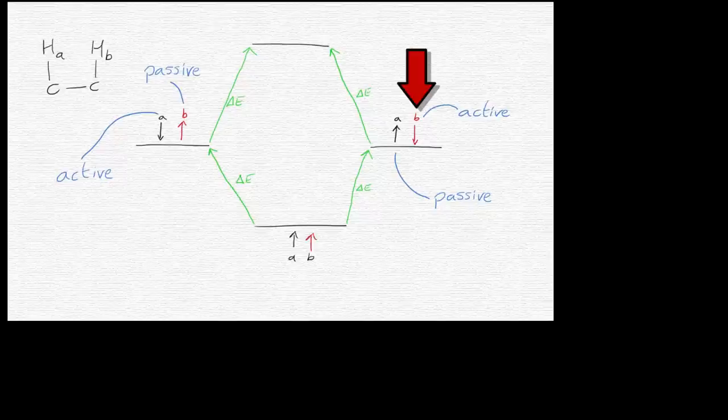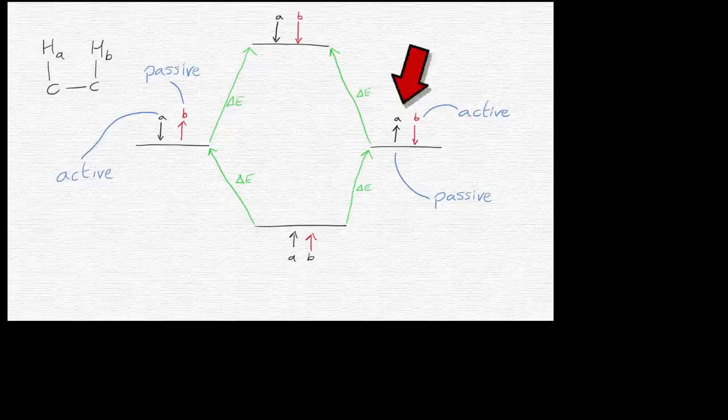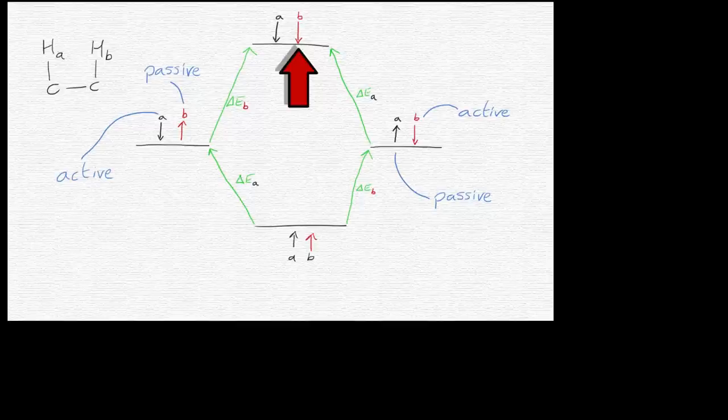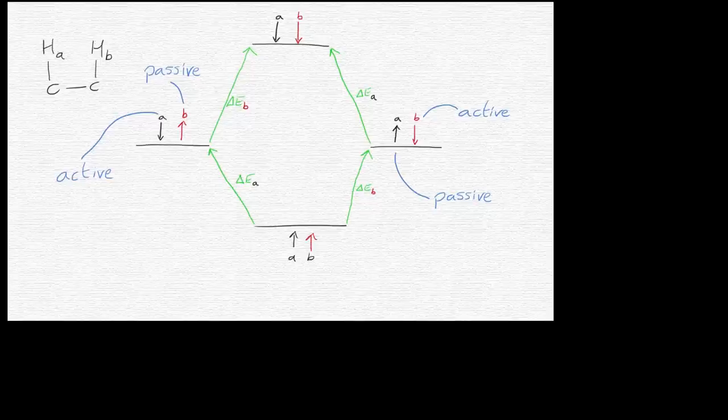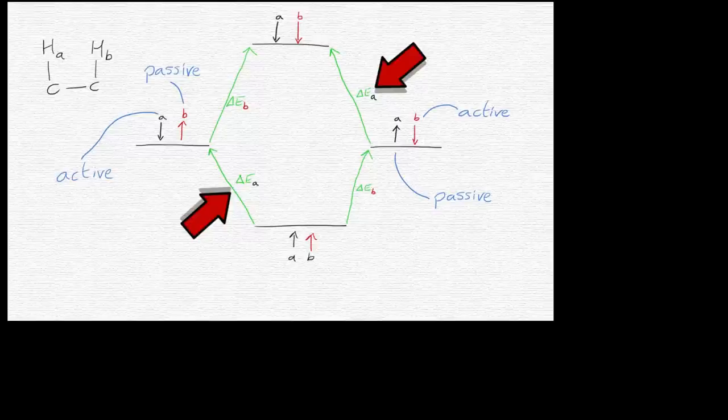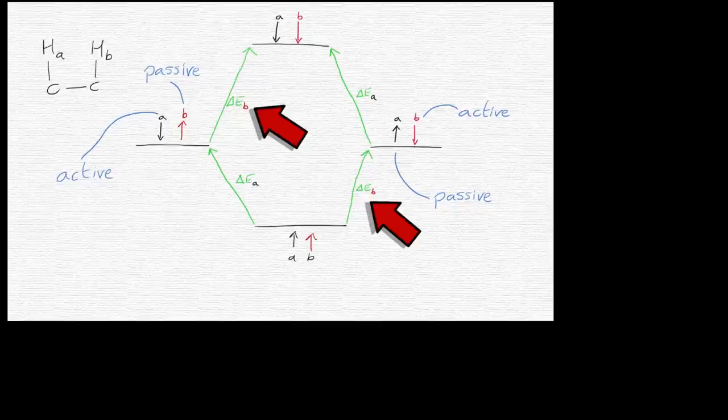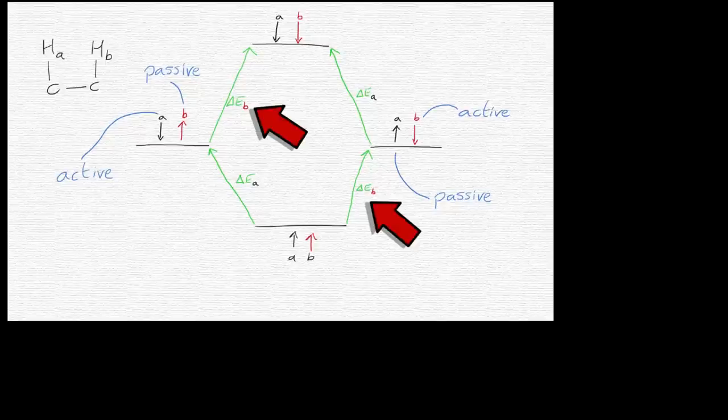If B does flip now, you can see that both spins are now opposed to the direction of the magnetic field, and this is the highest energy state for this two-spin system. So in contrast to a singlet transition where you've just got a lower energy state and a higher energy state and there's one delta E, if you will. Now, because HA is coupled to HB, it has two different energy transitions associated with it. And similarly, HB has two separate transitions associated with it. So HA will be seen as a doublet rather than a singlet, and HB will now be seen as a doublet as well.